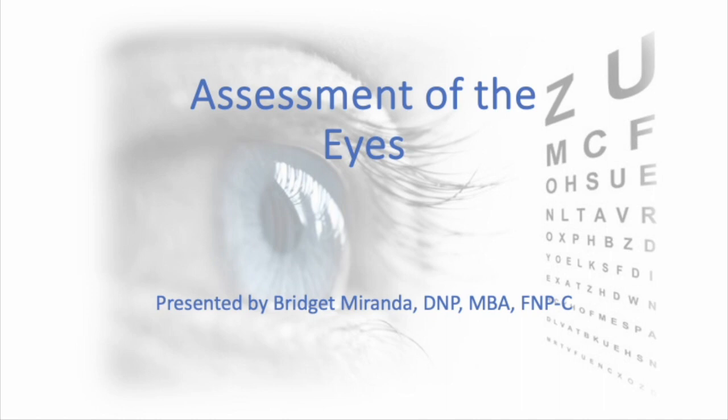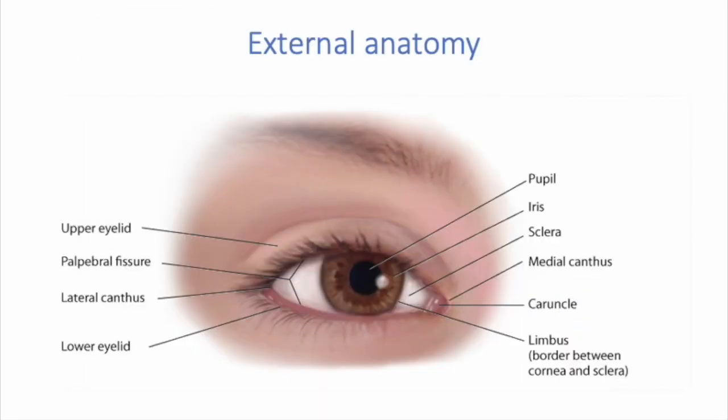Today we'll be reviewing the assessment of the eyes. Let's first look at the external anatomy. We can see that there is a bony orbital cavity surrounded by fat, which is protecting the eye.